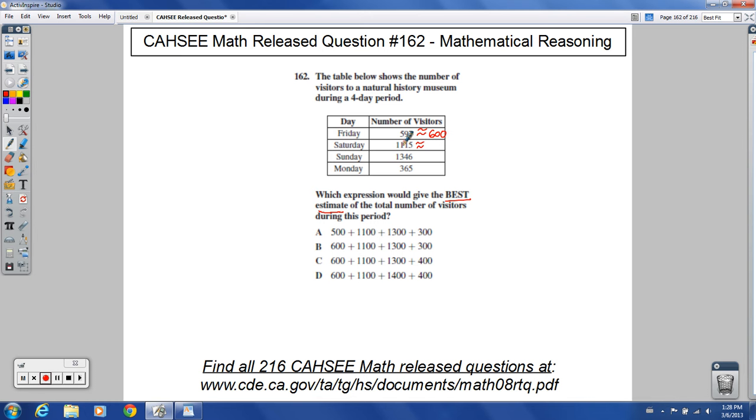And on this one, look at the tens digit again. So you have 11. It's four or lower right here, so we're going to round down on this one to 1,100.